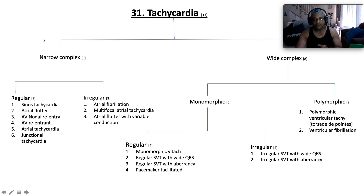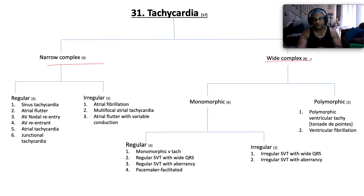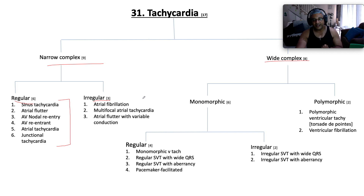Broadly, we stratify tachycardias into narrow and wide complex — that's the first branch point. Under narrow complex, you speak of regular narrow complex and irregular narrow complex. Under regular narrow complex tachycardia: sinus tachycardia, atrial flutter, AV nodal re-entry, AV re-entry, atrial tachycardia, junctional tachycardia. Under irregular narrow complex tachycardia, that's where atrial fibrillation comes in, together with multifocal atrial tachycardia and atrial flutter with variable conduction. But we are focusing on atrial fibrillation today. Wide complex can be stratified into monomorphic and polymorphic.